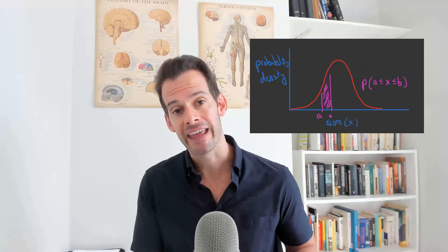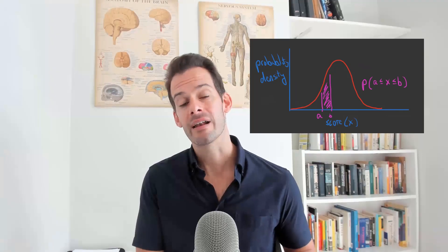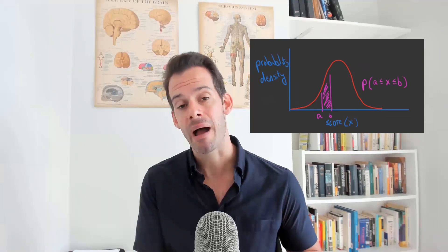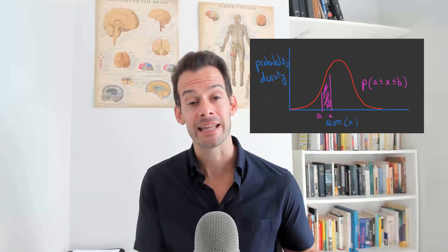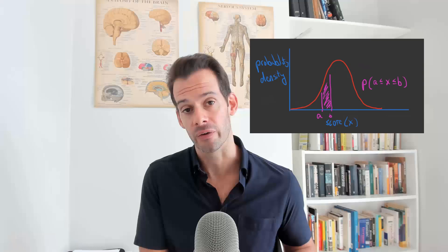In the previous video I introduced the idea of a probability density function — a line or curve that represents the distribution of a variable in a population. We can use this to estimate probabilities for any given range of values of the variable. If we select a range of values and find the area under the curve, this tells us the percentage of scores in the population within that range.